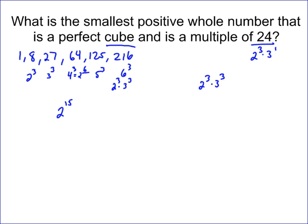And that is a multiple of 3, obviously because it's 3. So this is a perfect cube and a multiple of 24. Our answer is 2 to the 3rd times 3 to the 3rd, which equals 216.